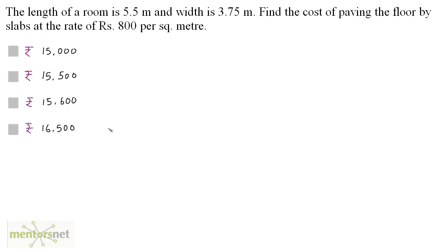The length of a room is 5.5 meters and width is 3.75 meters. Find the cost of paving the floor by slabs at the rate of 800 rupees per square meter.